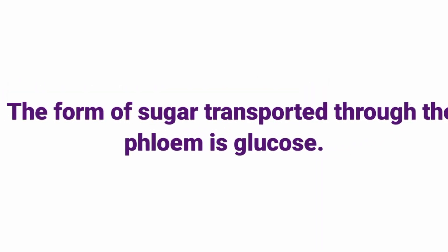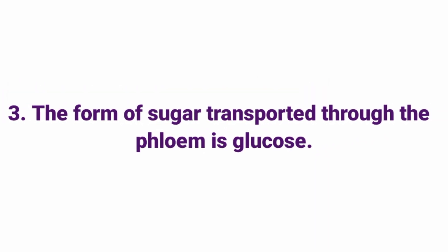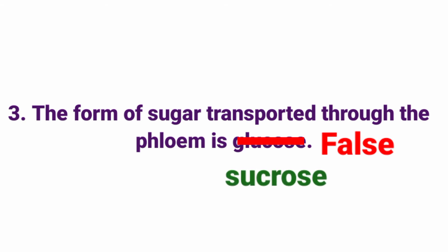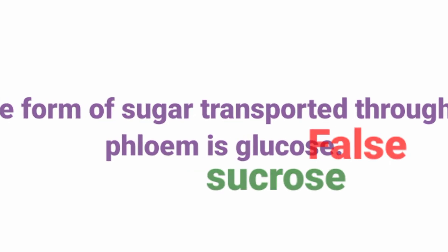The form of sugar transported through the phloem is glucose — False. The correct statement is: The form of sugar transported through the phloem is sucrose.